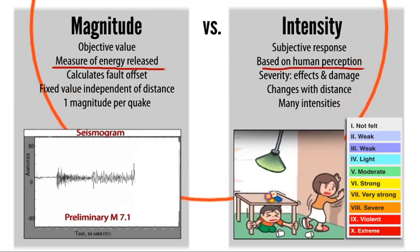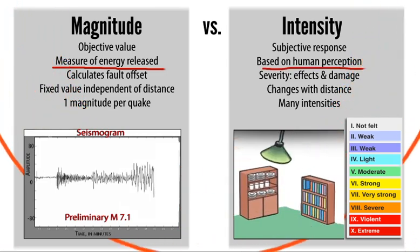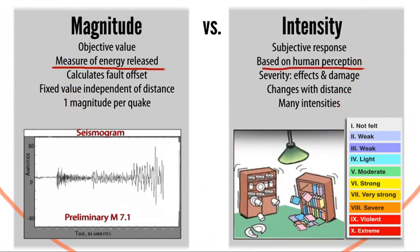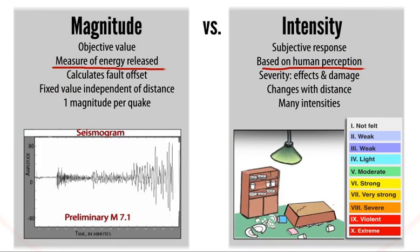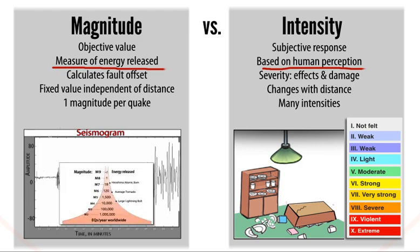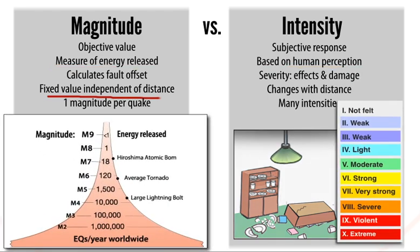which is the measurement of the strength of shaking at a specific location determined from effects on people, human structures, and the natural environment, produces a range of shaking intensities in different locations. Thus, unlike earthquake magnitude, which is the same for all locations, the seismic intensity you feel depends on where you are.